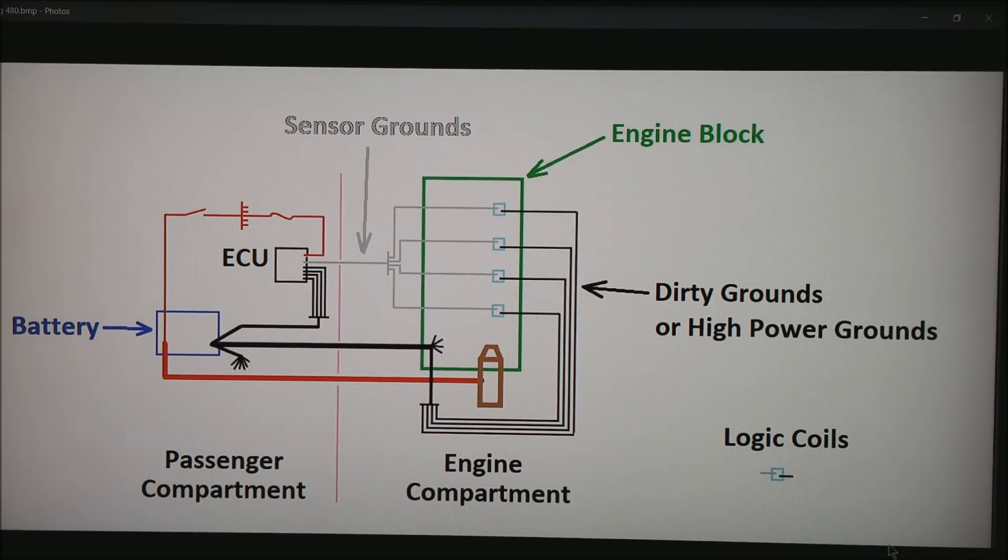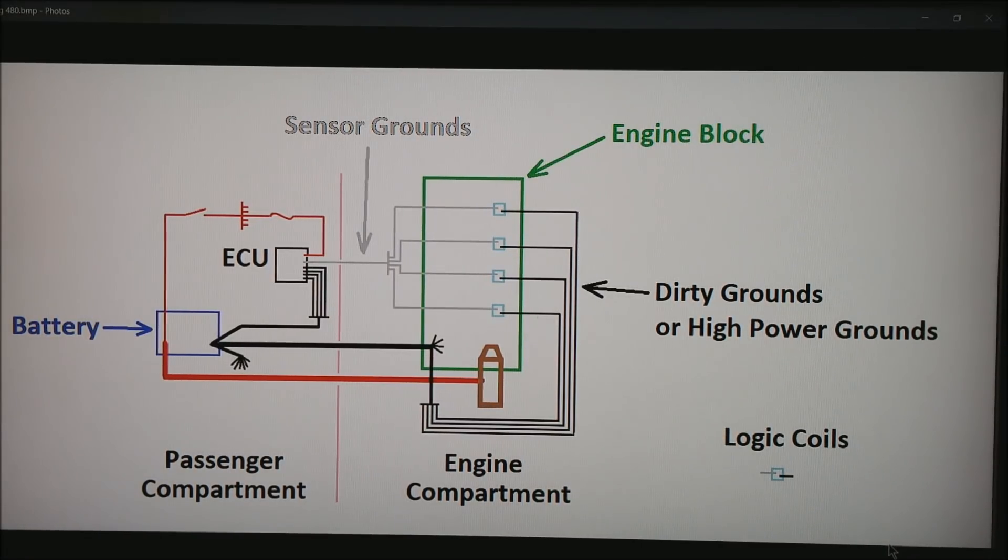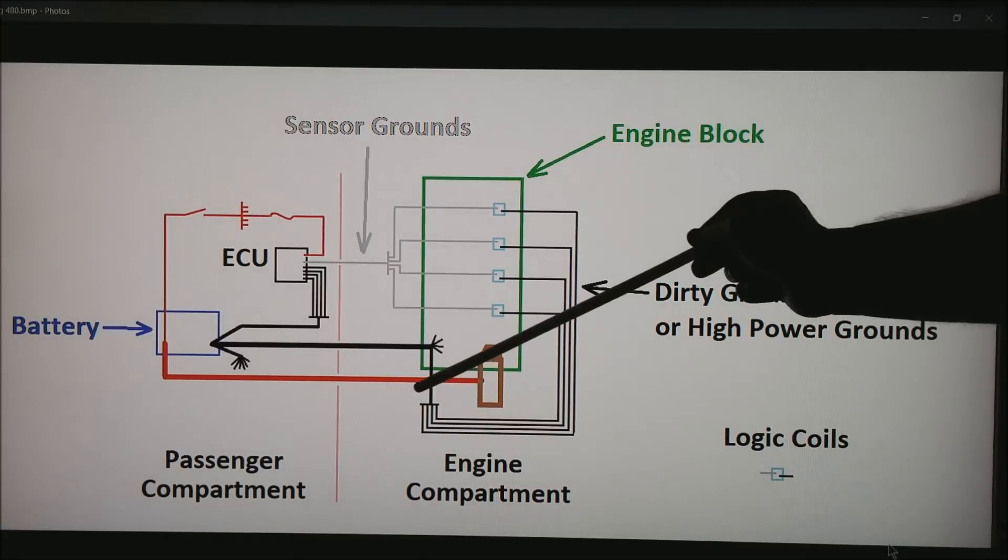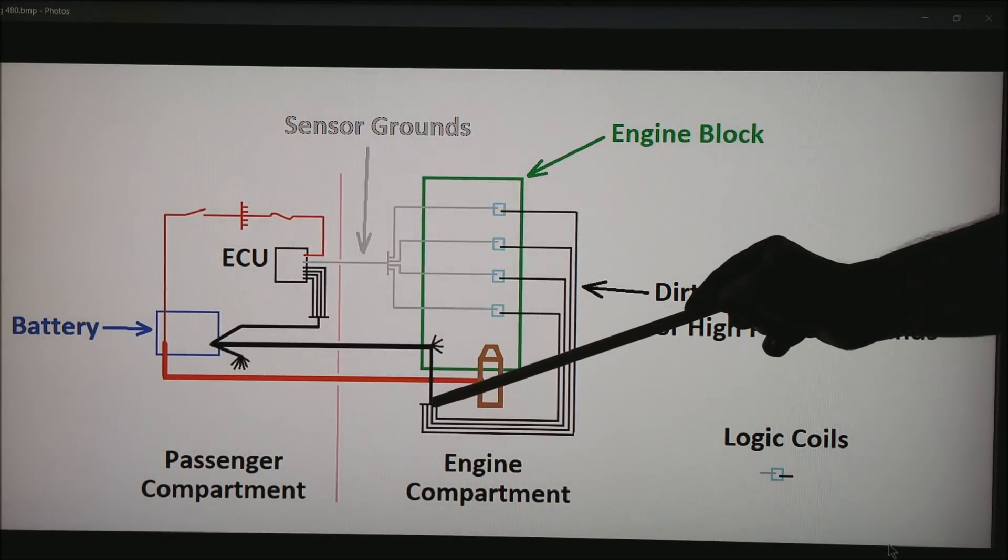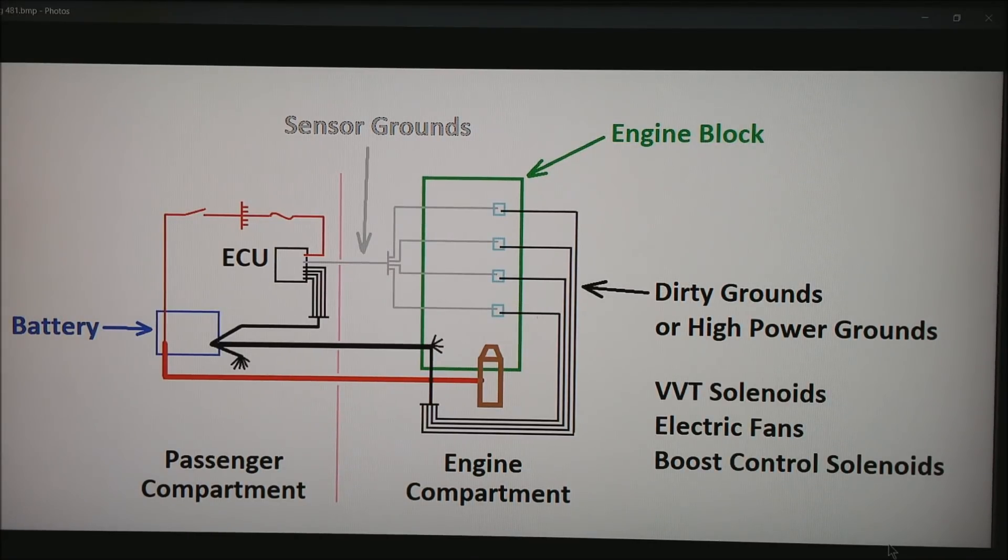We also have what I refer to as dirty grounds or high power grounds. In this case what I'm showing you is the logic coils. But there's quite a few other devices that need the high power grounds on the motor. So what I do is connect all those to another one of these terminal strips and then a large wire back to the same ground point on the block. These all include things like your variable valve timing, solenoids, electric fans, boost control solenoids. All sorts of things that we'll feed 12 volts to to charge up or energize. And then the ground will have to return to the block.